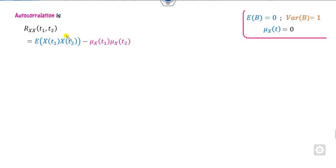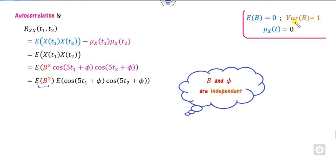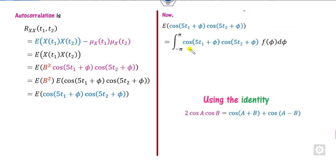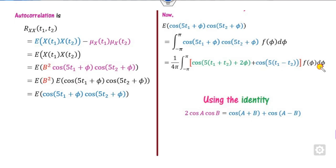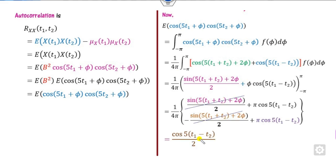How do you find the correlation? The autocorrelation is R_x(t1, t2). Since B and φ are independent, you can separate E[B²] and the trigonometric integral. E[B²] is found from the variance: since mean = 0 and variance = 1, E[B²] = 1. Multiplying and dividing by 2 and using the cosine product identity, you integrate with respect to φ using f(φ) = 1/(2π) over [−π, π]. After cancellation, you get the required autocorrelation answer.